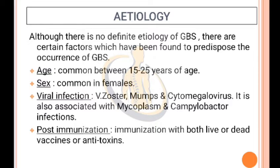Etiology and Causes: Although there is no definite etiology of GBS, certain factors predispose its occurrence. Age: common between 15 to 25 years. Sex: common in females. Viral infections: varicella-zoster, mumps, and cytomegalovirus. It is also associated with mycoplasma infection and Campylobacter infections.